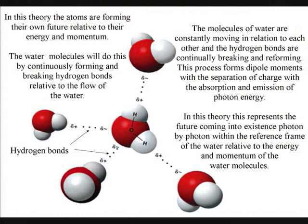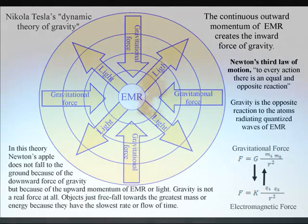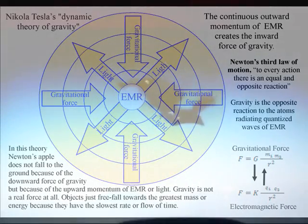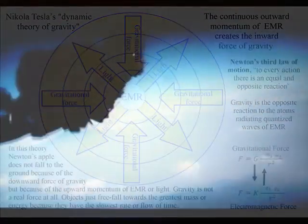With the future coming into existence photon by photon within each reference frame, in this theory gravity is just a secondary force to the electromagnetic force, and objects just freefall towards the greatest energy because it has the greatest time dilation. If we think of water as just freefalling towards the greatest time dilation relative to its position, energy, and momentum — the energy and momentum represented here by the flow of the water.